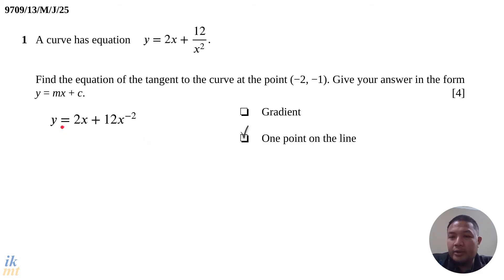In index form, y = 2x + 12x^(-2). This is much easier to differentiate.